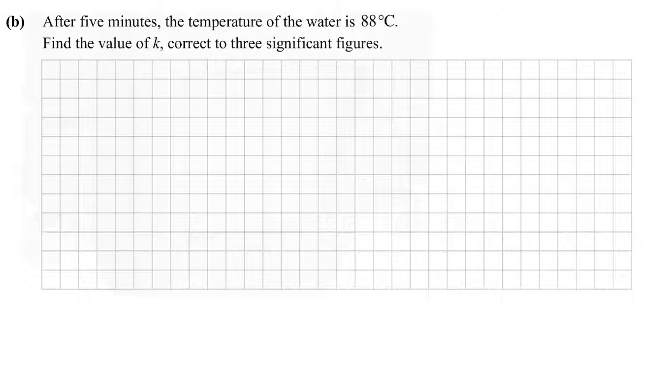Part (b): After five minutes, the temperature of the water is 88 degrees Celsius. Find a value of k correct to three significant figures. We have y equals 77e to the power of kt. They said that t equals 5. We need to figure out our y, which is going to be 88 minus 23. Be careful - a lot of students at this point took the 88 away from 100. Remember that y is the temperature difference between the current temperature of the water and room temperature. So that gives us 65, and we end up with 65 equals 77e to the power of 5k.